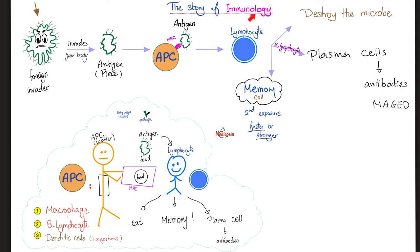Let's review the story of immunology. Here is a foreign bacteria invading your body. We take a piece of it — that piece is called the antigen. Who's going to present the antigen? Antigen-presenting cells. Presented to whom? To the lymphocytes. When the lymphocytes recognize the antigen, they will stop being naive and grow up to destroy the microbe.